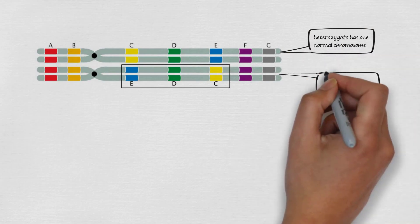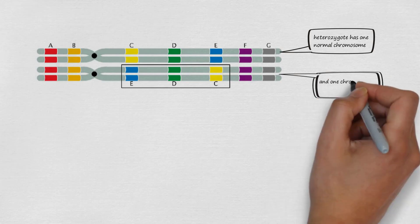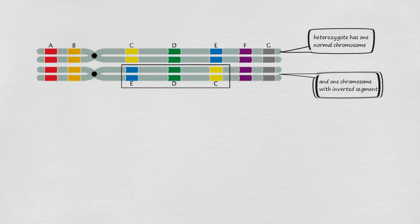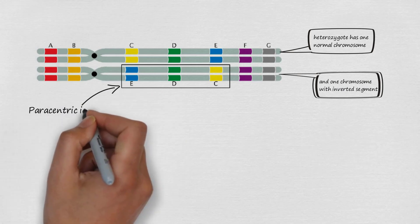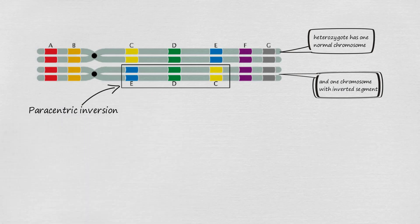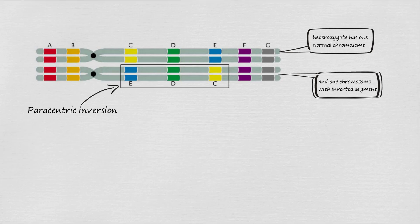To understand this, let's look at a diagram. There is a chromosome with segment sequence A B C D E F G. In the second chromosome, the sequence gets inverted — the sequence C D E gets inverted to E D C. This is called paracentric inversion because the centromere is not included in the inverted segment.